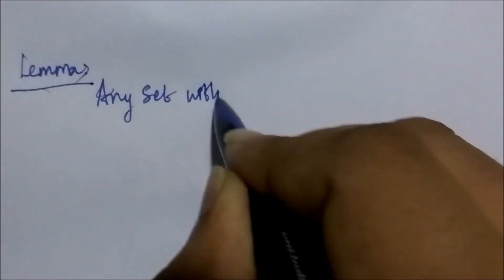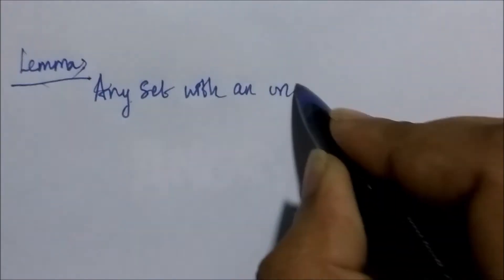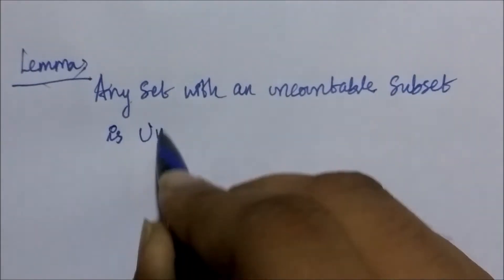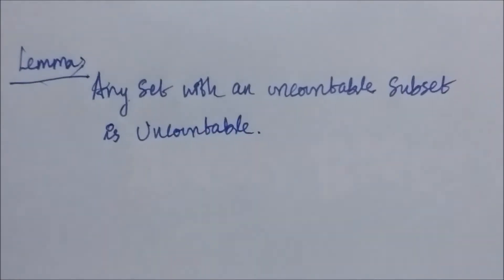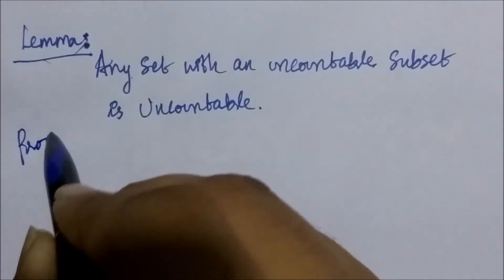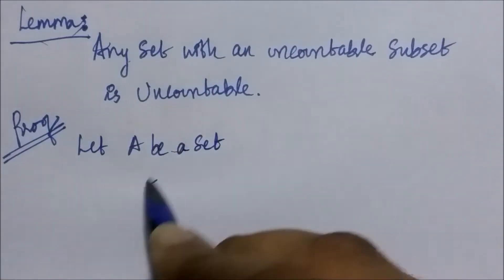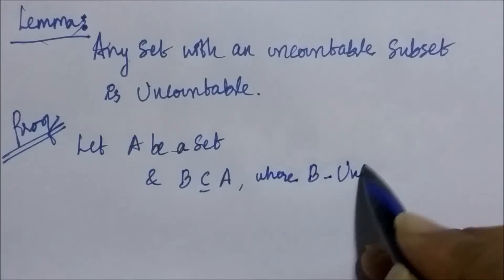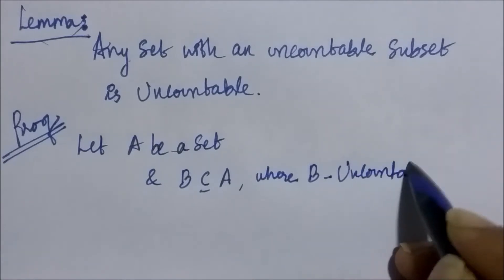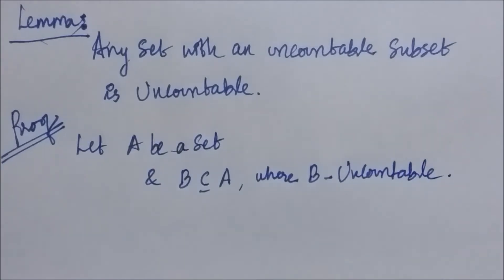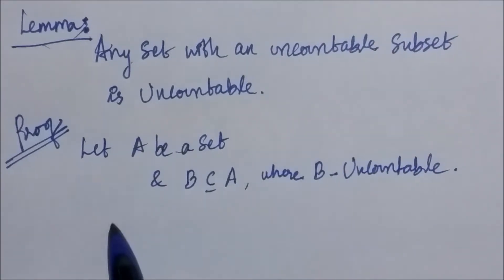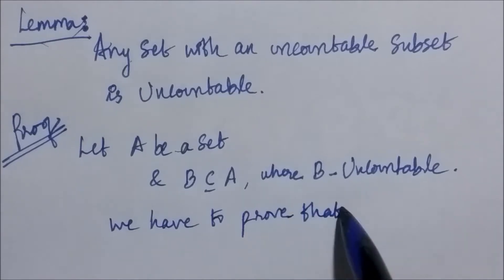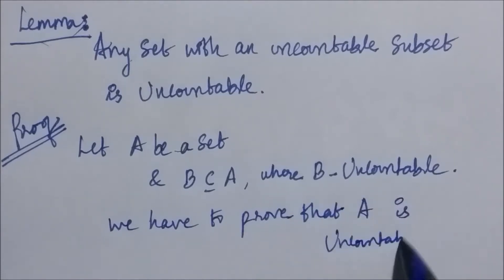Let's look at the statement once more. It says that any set with an uncountable subset is uncountable. So let's start the proof. Let A be a set and B be a subset of A, where B is an uncountable set. We have to prove that A is uncountable.